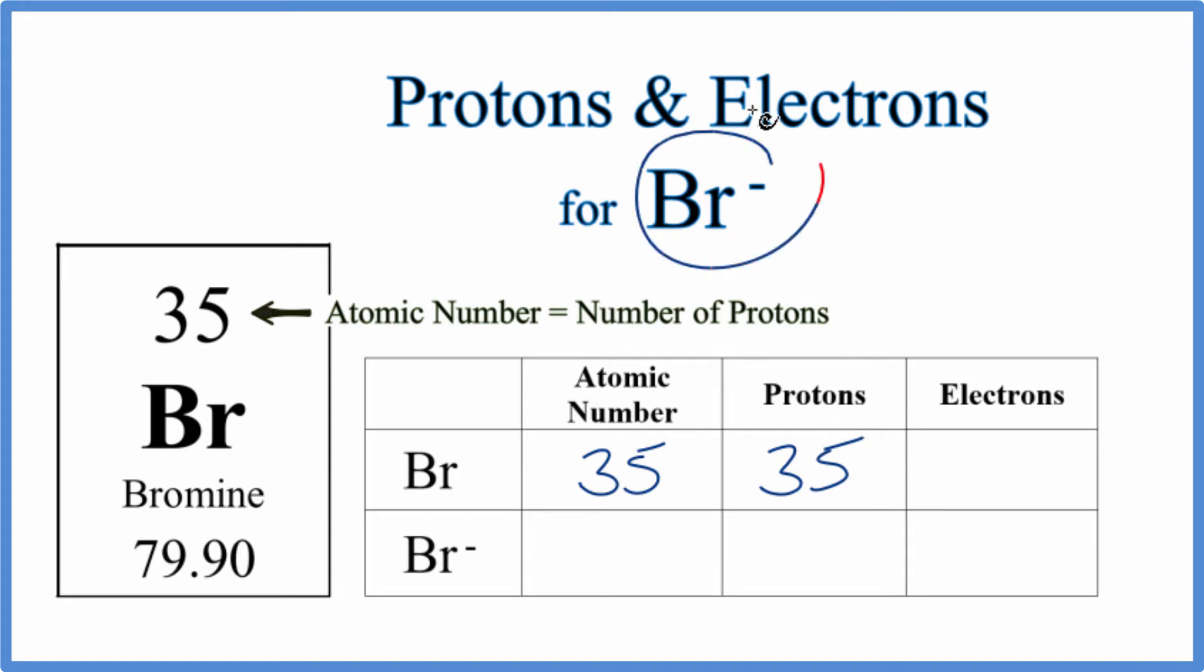When we look at an ion and a neutral element, the only thing that's different is the number of electrons. The atomic number and the protons are the same for bromine and the bromide ion - 35 atomic number and therefore 35 protons.